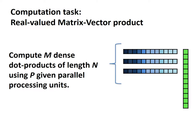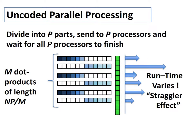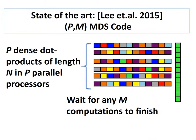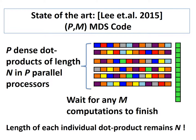Let us now state our formal problem statement. We want to compute m dense dot products of length n using p given parallel processing units. An uncoded parallel processing strategy would be to divide the task into p parts, send to p processors, and wait for all of them to finish. However, the run time varies over different processors due to the straggler effect. An alternative strategy would be to use repetition. The state of the art technique is the use of MDS codes that encodes m vectors into p vectors of length n for p parallel processors and waits for any m of them to finish. But note that the length of each individual dot product still remains n.